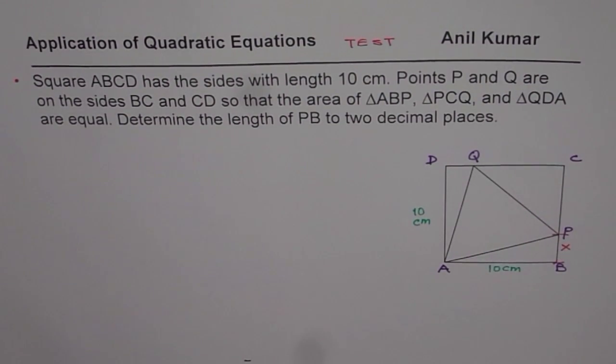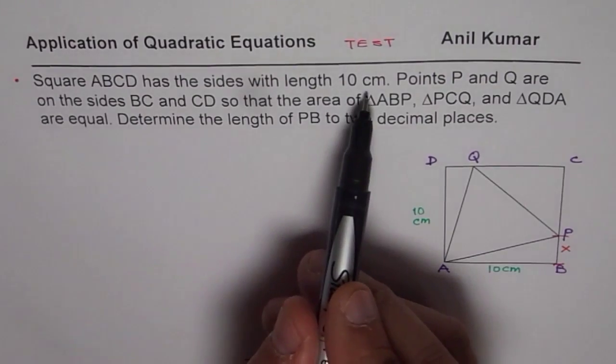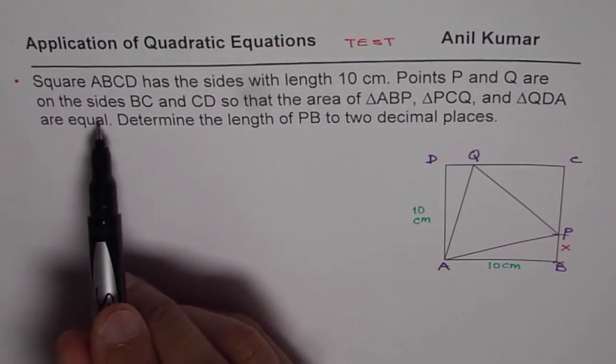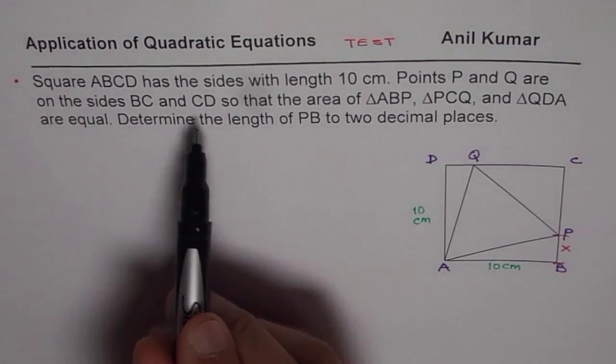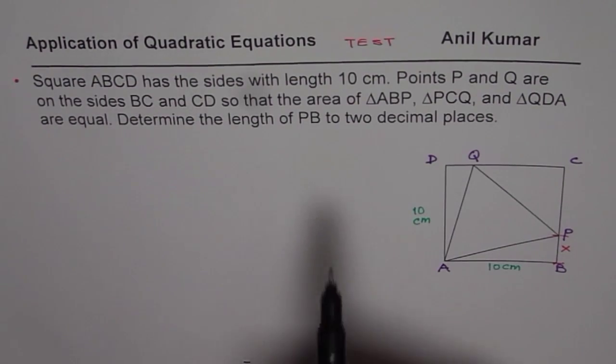Let it be X for the time being. So let's read the question once again. You can actually pause the video, answer and then look into my suggestions. So the question for us is square ABCD has the sides with length 10 centimeters, points P and Q are on the sides BC and CD, so that the area of triangle ABP, triangle PCQ and triangle QDA are equal. Determine the length of PB to two decimal places.